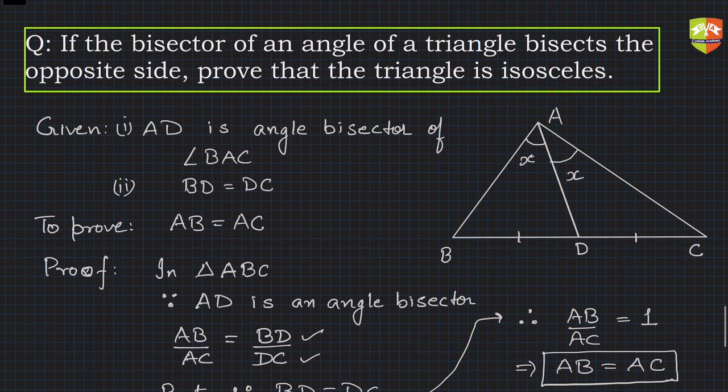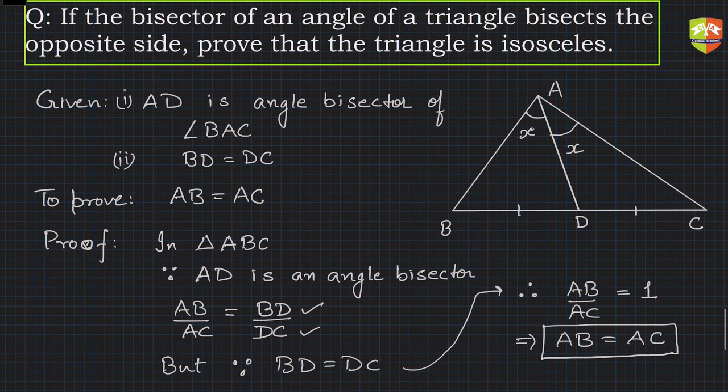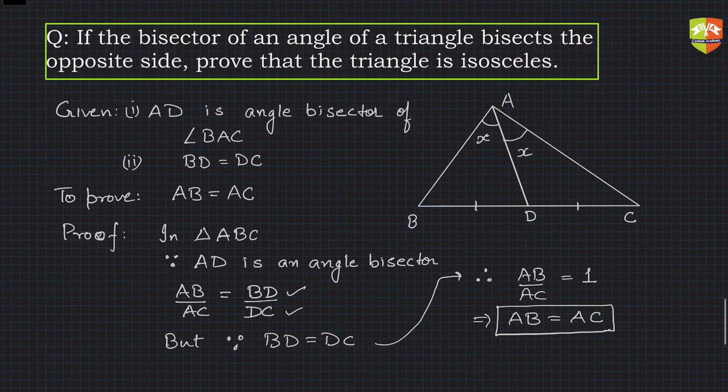Again, the learning is: if you see there is a bisector involved and we are talking about ratios of the sides of the triangle, then internal angle bisector comes handy to solve such problems.